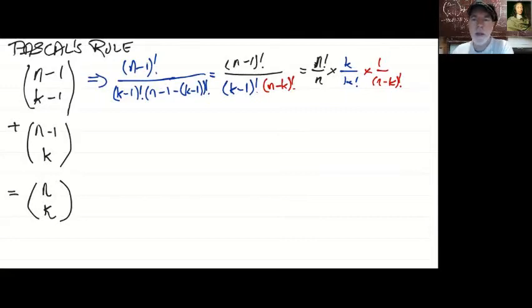And then our final bit will reproduce the bit in red and that is not going to change, so we've got n minus k factorial. Now, I'm hoping that you can see what we've got going on here. We've got n factorial, k factorial, and n minus k factorial.